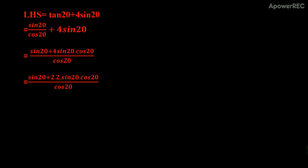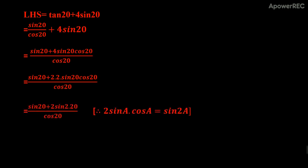We know the identity 2sinA·cosA = sin(2A). So 2sin(20°)cos(20°) = sin(40°). This gives us sin(20°) + 2sin(40°), all over cos(20°).